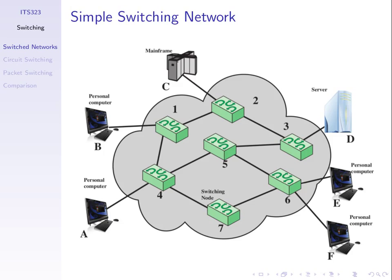For example, if A was sending data to F across the path 4, 5, 6, and at the same time B wanted to send to E across the path 1, 4, 5, 6, then the link between 4 and 5 would need to carry data from two different users — from user A and from user B. We would commonly use multiplexing on this link such that when A and B send at the same time, the data arrives at node 4, which combines it using FDM or TDM and sends it to node 5 across the single link.